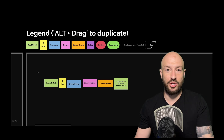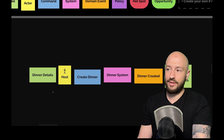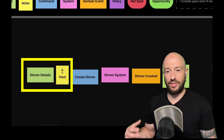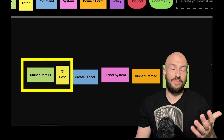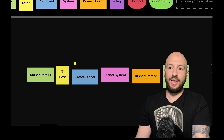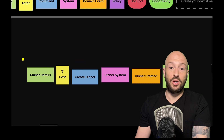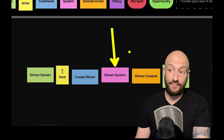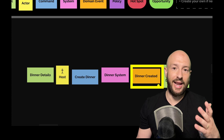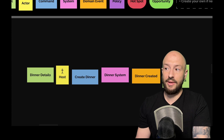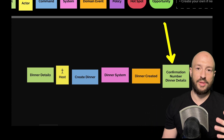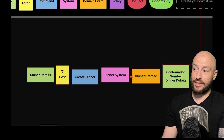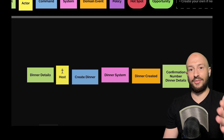The flow goes: a read model is observed by the user, maybe it's information they inputted or search results, and they decide to trigger some command. The host inputs dinner details and invokes 'create dinner.' The command is invoked on a system, which produces a domain event — 'dinner created' — which results in a read model back to the user, such as confirmation details. The rules are: after green you have yellow, after yellow you have blue, and so on.